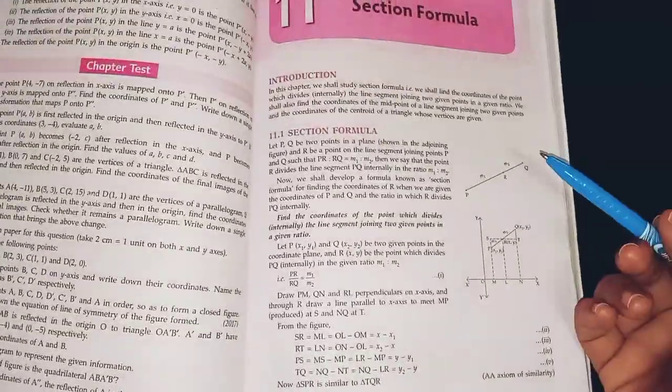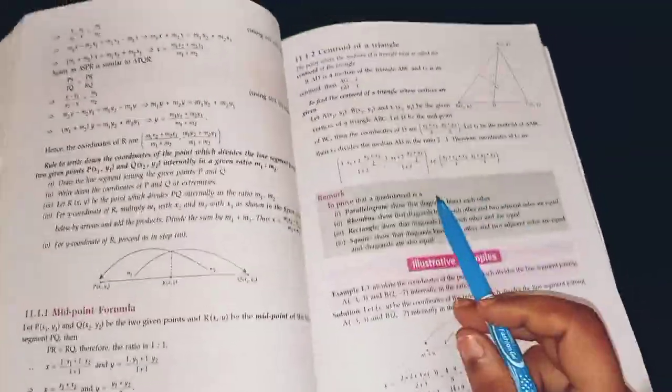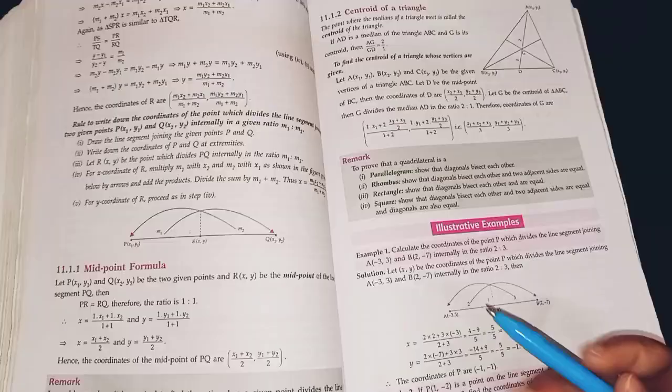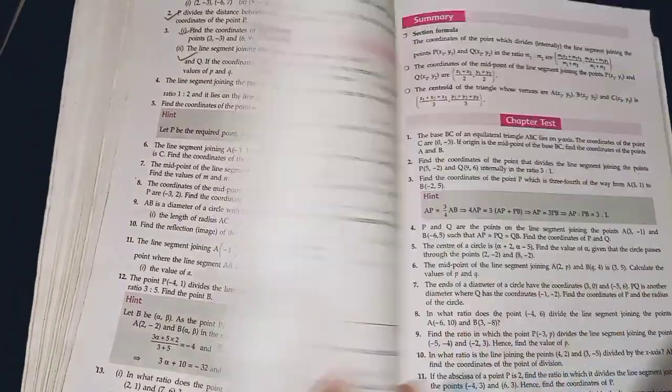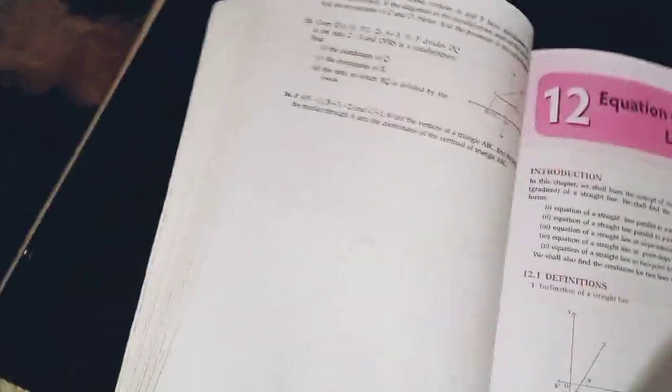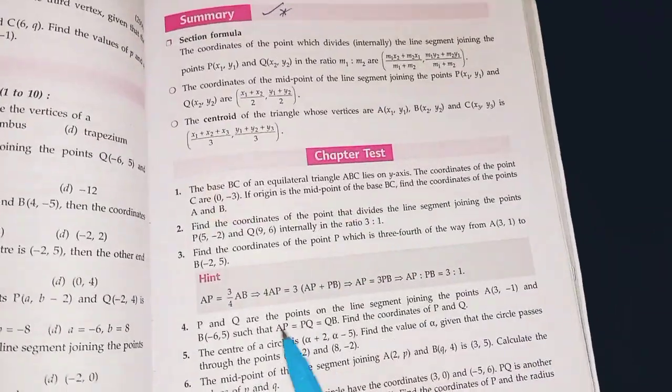Now, for section formula, there is just one formula and some concepts. The midpoint formula and the trisection formula. The centroid of a triangle. Do all of them. And then, again, the previous year questions. And you can see that they have given the summary. This is also very helpful. You can revise this summary.